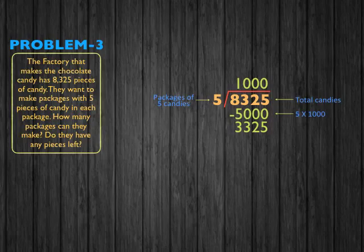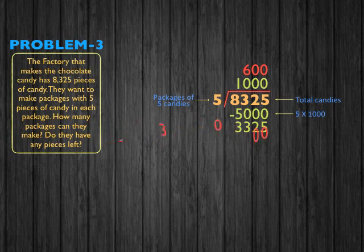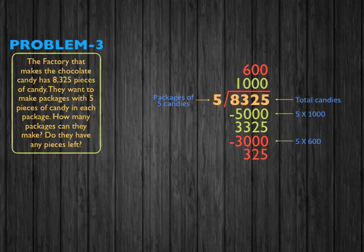Next, we figure out how many groups of fives we can make out of hundreds to get close to 3,325, which would be 600. Because 600 times 5 equals 3,000. So 3,325 minus 3,000 gives us 325 pieces left over.